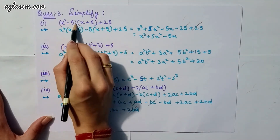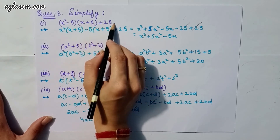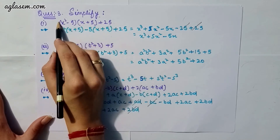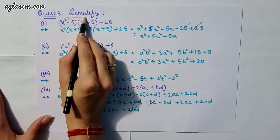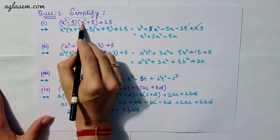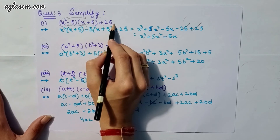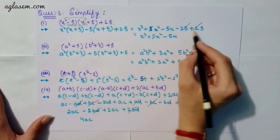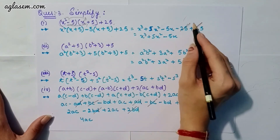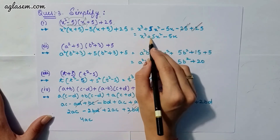Moving to the third question which says: simplify. The first part is (x² − 5)(x + 5) + 25. x² will be multiplied by this whole bracket and minus 5 will be multiplied by this whole bracket, then add 25. The −25 and +25 cancel out, so our answer will be x³ + 5x² − 5x.